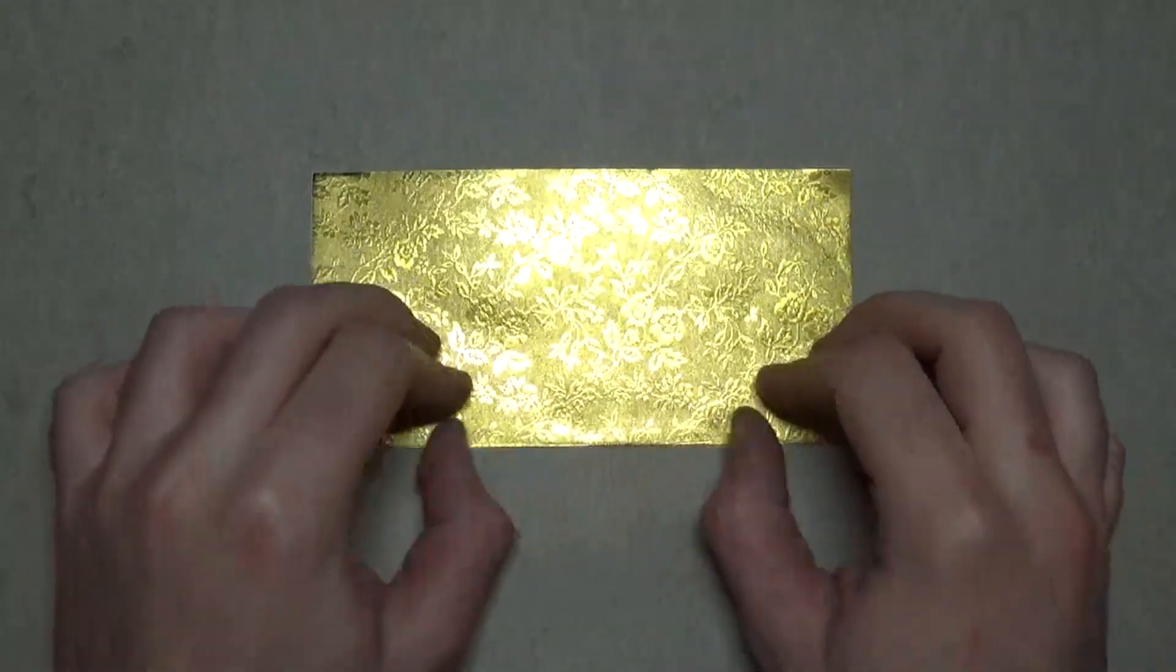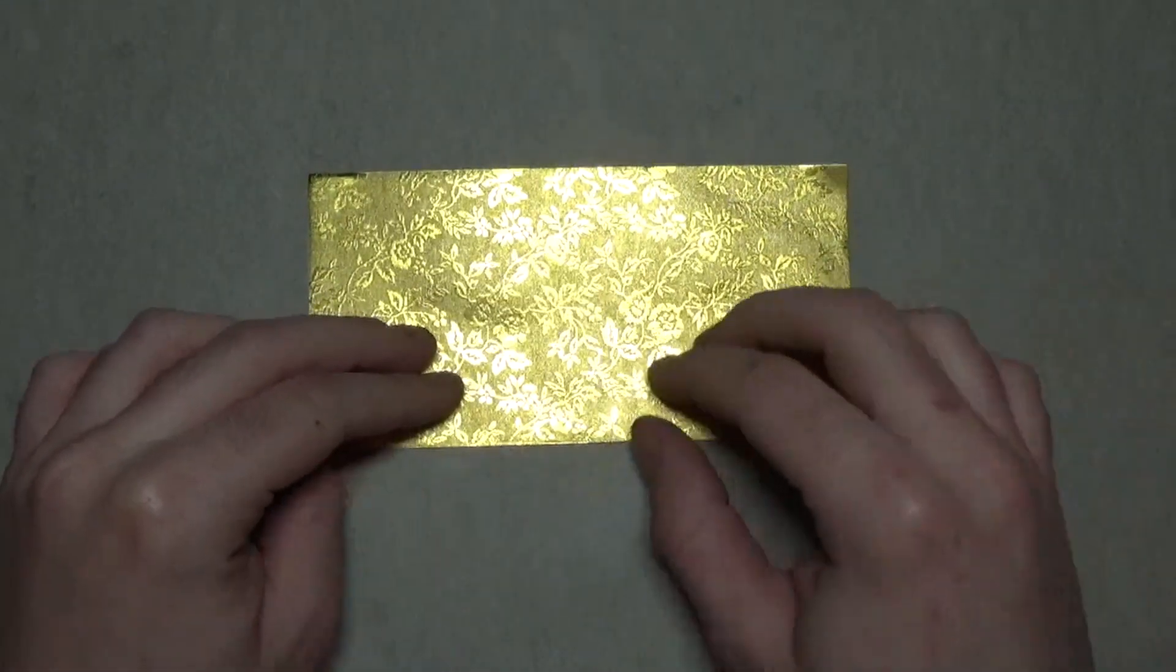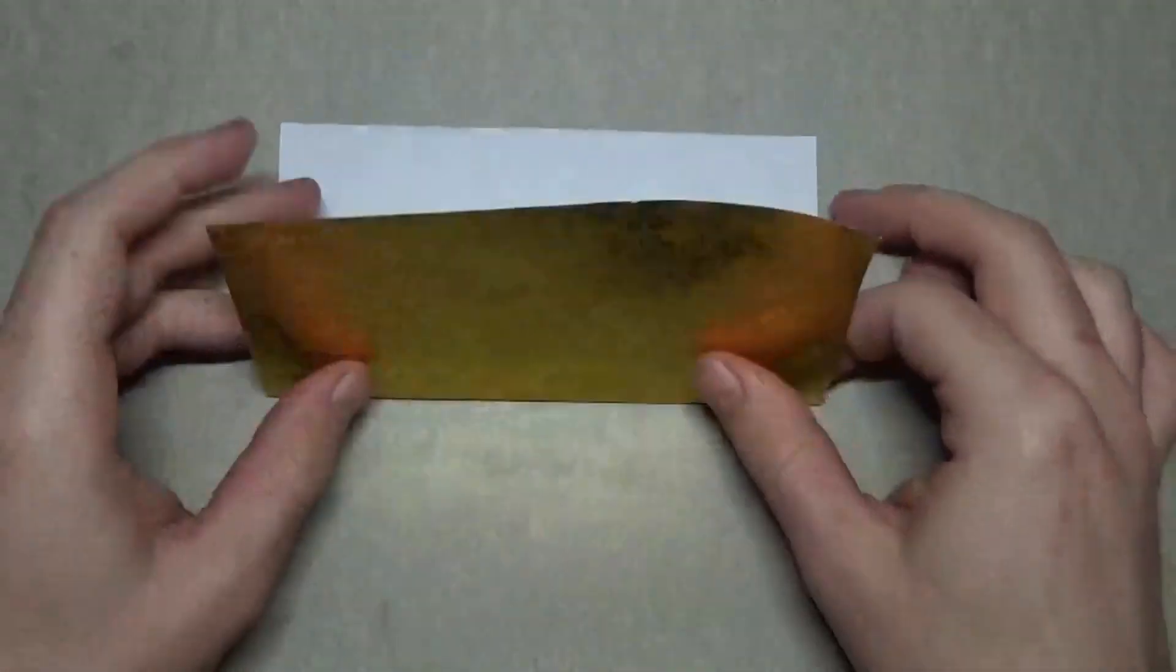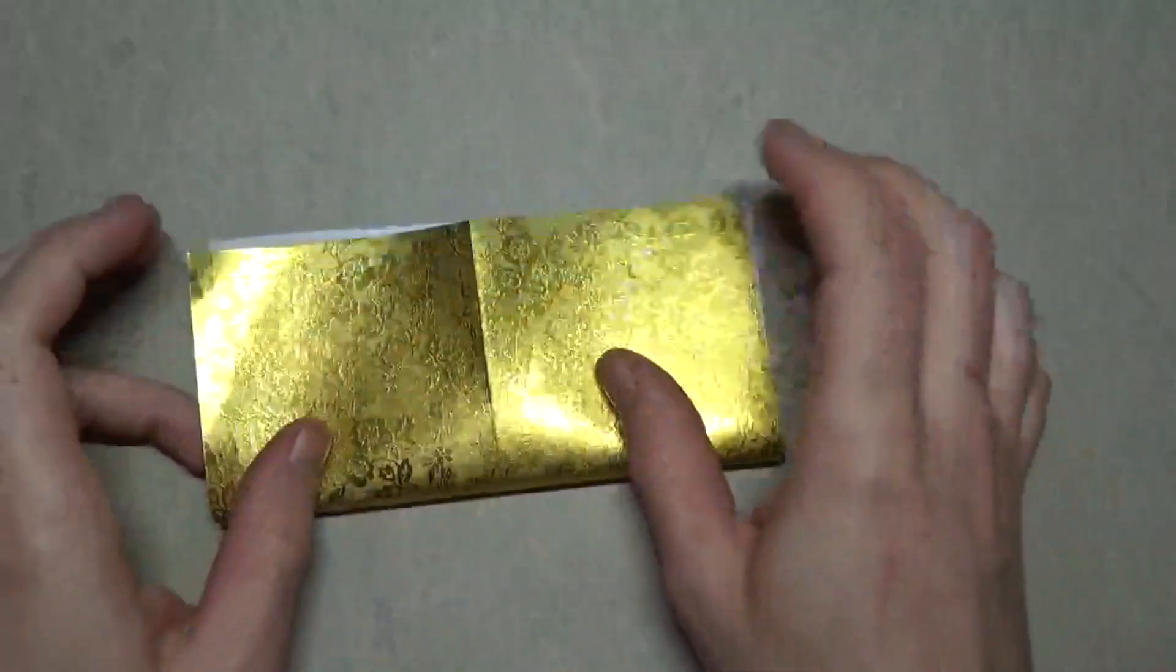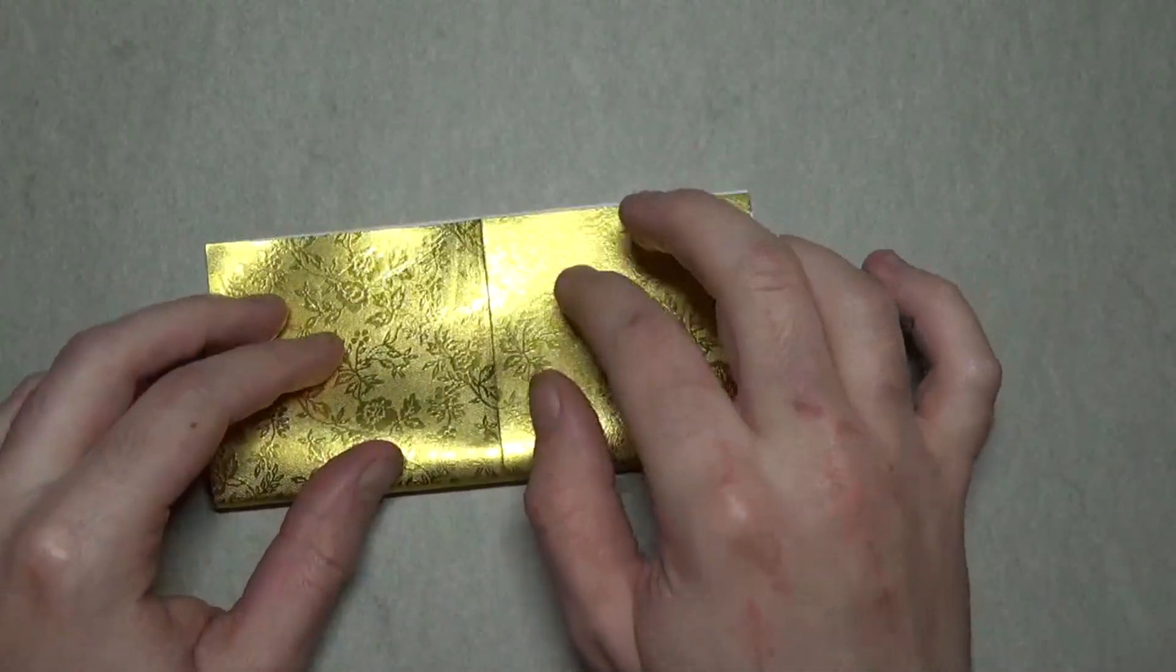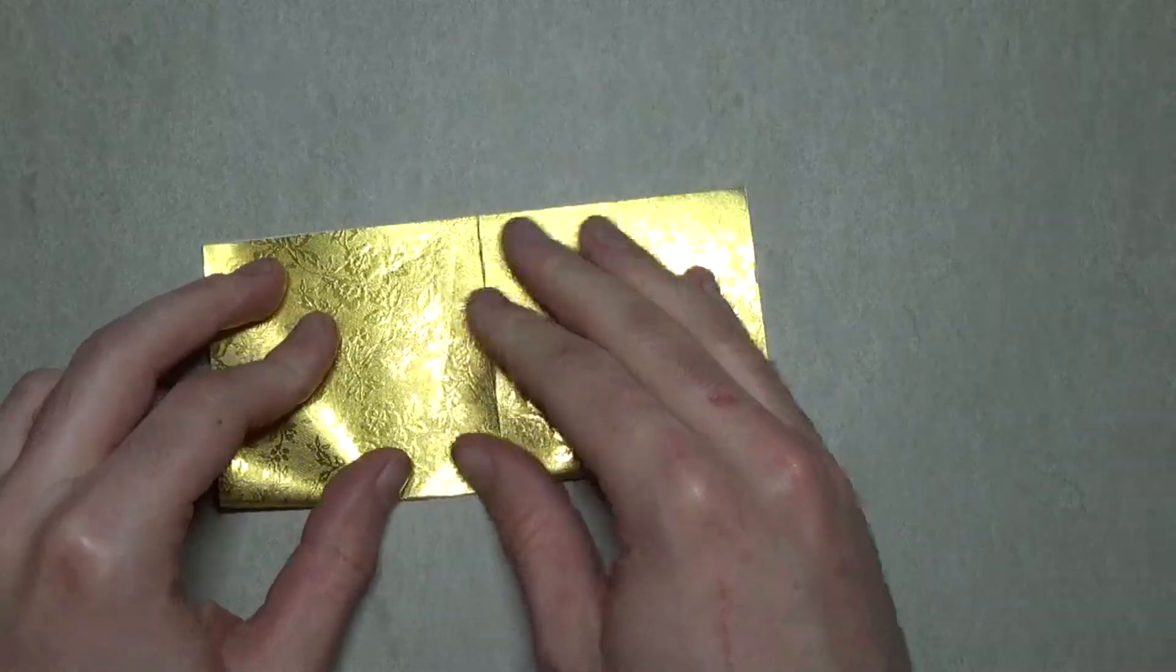You can use a square sheet of origami if you'd like, or pretty much any paper for this, even a sheet of printer paper cut square works. White side up and fold in half both ways. It's got a nice texture to it and it's got a nice flower pattern.